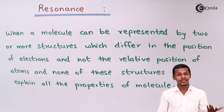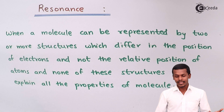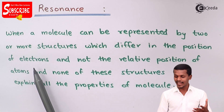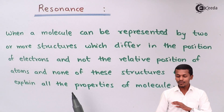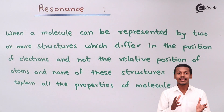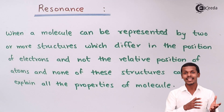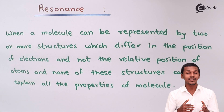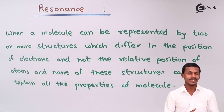So what is resonance? When a molecule can be represented by two or more structures which differ in the position of electrons but not the relative position of the atoms, and none of these structures can explain all the properties of the molecule, that phenomenon is basically known as resonance. The more resonance a molecule has, the more stable it is, just like benzene.